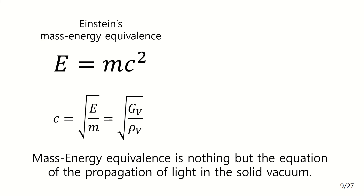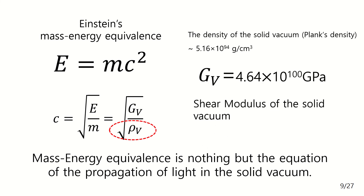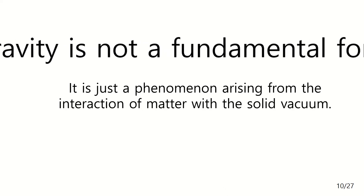Substituting the density value of the solid vacuum from quantum mechanics into this equation gives the shear modulus of the solid vacuum as 10 to the power of 100 GPa — a very huge value compared to the value of diamond, around 450 GPa. So, gravity is not a fundamental force. It is just a phenomenon arising from the interaction of matter with the solid vacuum, and we can seek its origin in terms of solid mechanics.